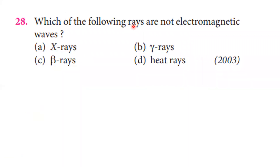Which of the following rays are not electromagnetic? X-rays and gamma rays are electromagnetic waves. Alpha and beta rays are not electromagnetic waves. So alpha rays and beta rays are the correct answer among the given options.